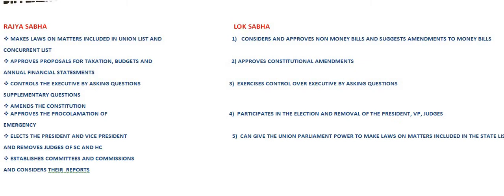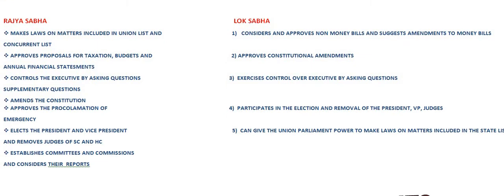Next, the President and Vice President also remove the judges of the High Court and Supreme Court. It establishes committees and commissions and considers their reports. It can also give the Union Parliament power to make laws on a matter included in the State List.